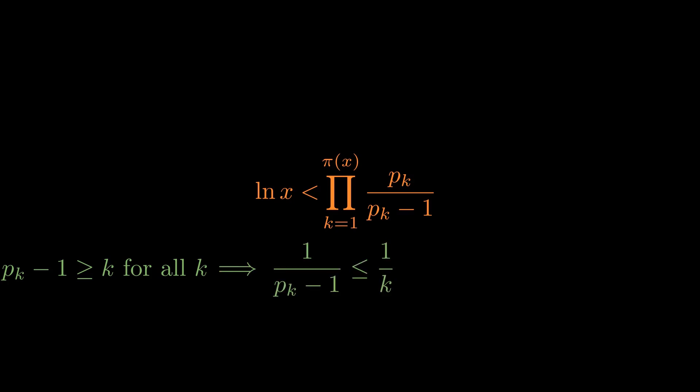And so 1 over (p subscript k minus 1) is less than 1 over k. To see where this is useful, we will write the term in the product as 1 plus 1 divided by (p subscript k minus 1), and so we have that product is less than the product of (1 plus 1 over k).